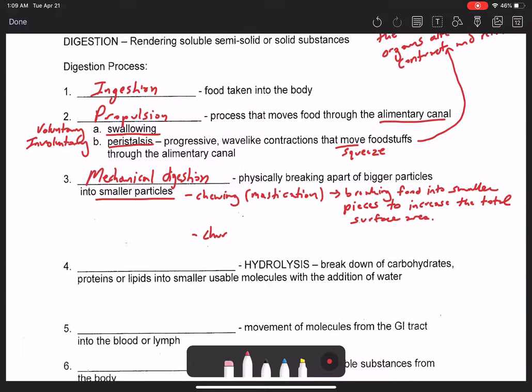We also have churning as a sub-process of mechanical digestion. Churning occurs in the stomach, by the way, uniquely. And churning is basically a mixing of the food so that the foodstuffs can be mixed with enzymes. And enzymes are proteins that facilitate chemical reactions. So mix food with enzymes. And these enzymes are secreted by specialized cells within the wall of the stomach.